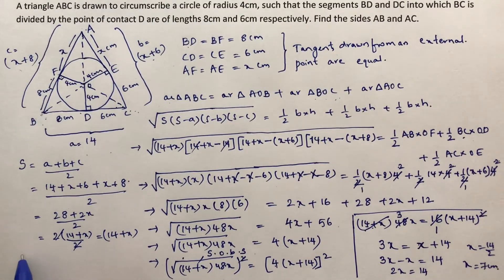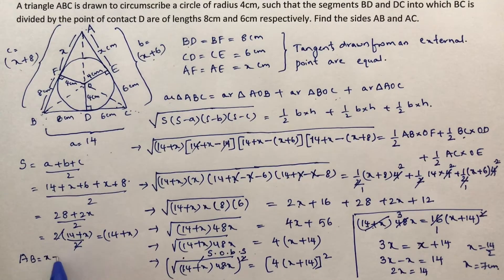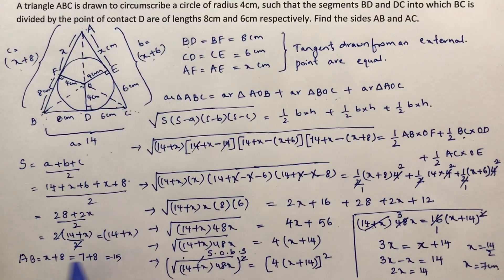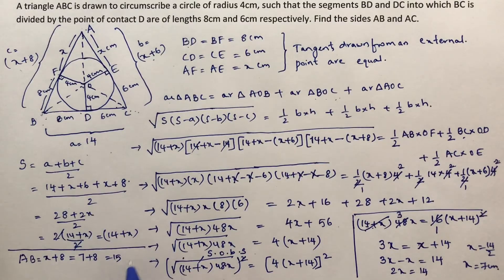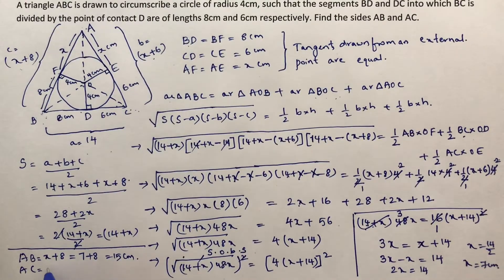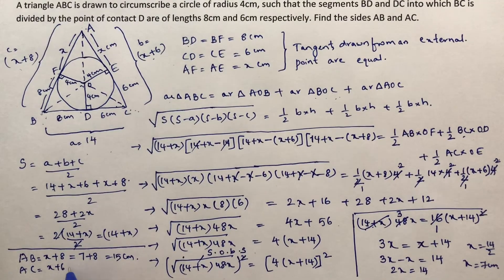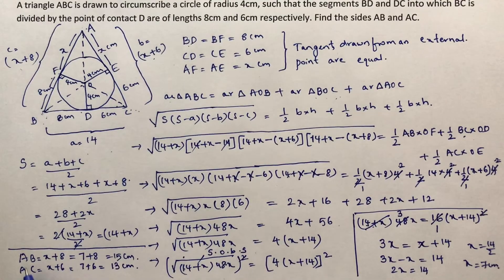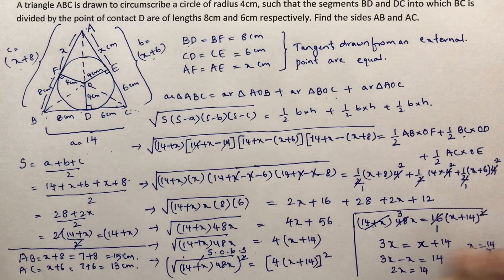Now AB equals X plus 8, so 7 plus 8 equals 15 centimeters. And AC equals X plus 6, so 7 plus 6 equals 13 centimeters. Therefore AB is 15 centimeters and AC is 13 centimeters.